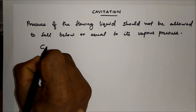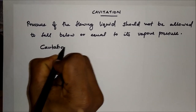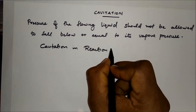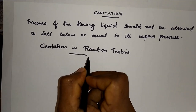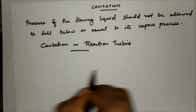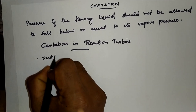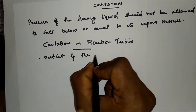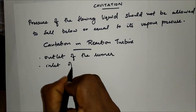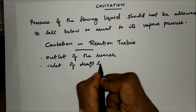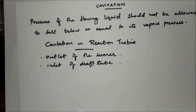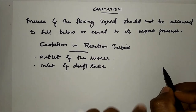In the case of a reaction turbine, cavitation may occur at the outlet of the runner or at the inlet of the draft tube. These are the sections where the pressure is low.